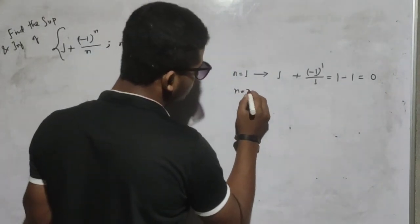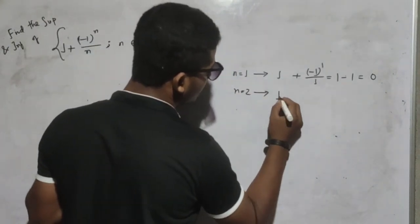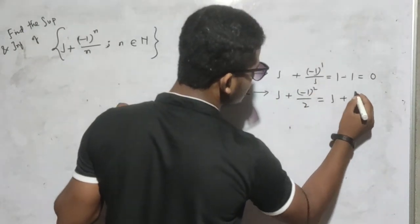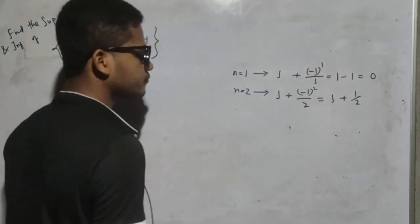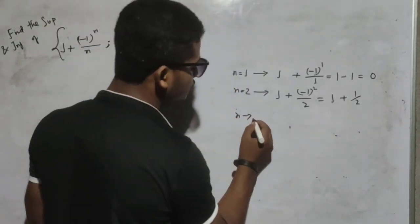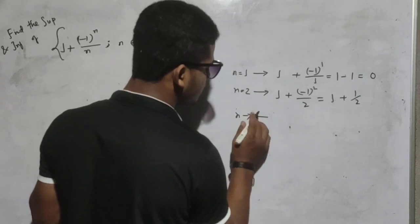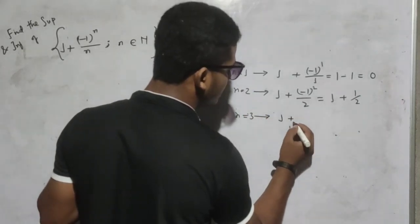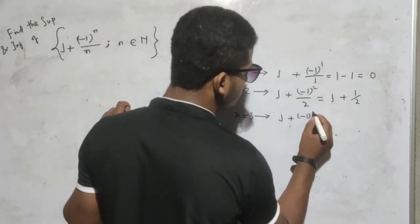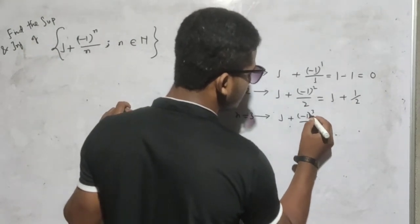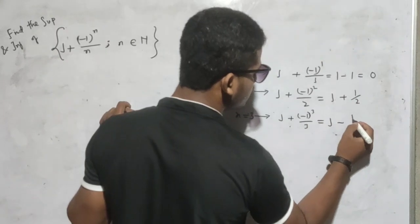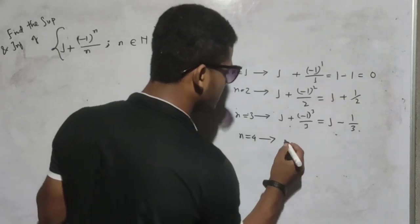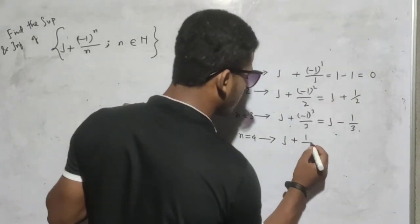For n equal to 2, you will get the element 1 plus (-1) to the power 2 divided by 2, that is 1 plus 1/2. For n equal to 3, you will get the element 1 plus (-1) to the power 3 divided by 3, that is 1 minus 1/3. For n equal to 4, you will get the element 1 plus 1/4.